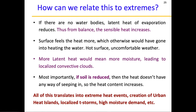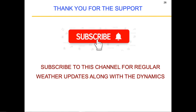Climate change is inevitable mainly because we are responsible for urbanization, reducing green cover, and everything. Urban heat island is an anthropogenic effect — it is completely manmade. From this energy budget, you now understand why extreme heat and extreme events are on the rise. Thank you for watching. Please subscribe to this channel for regular weather updates along with the dynamics.